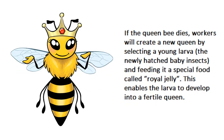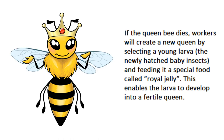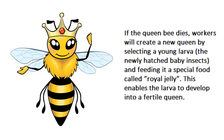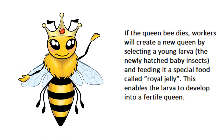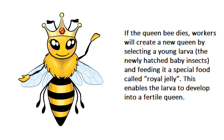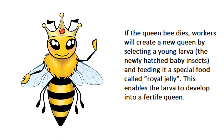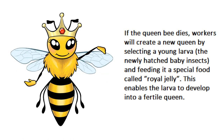اگر queen bee مر جائے تو worker bees ایک نئی queen بناتی ہیں by selecting a young larva — the newly hatched baby insect — and feeding it a special food called royal jelly. This enables the larva to develop into a fertile queen. یعنی اگر پہلی queen مر جائے تو ایک larva کو چُنا جاتا ہے، اسے special خوراک دی جاتی ہے اور پھر وہ نئی queen بن جاتی ہے۔